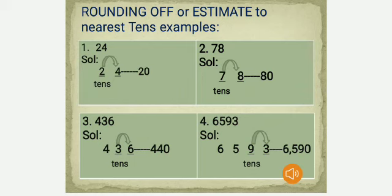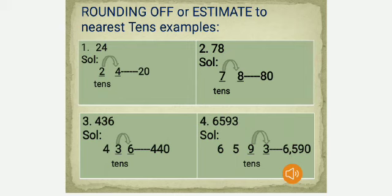Third example: 436. We round only the tens place, so consider 36. The next right digit of 3 is 6, which is more than 5, so we round up to 40, and the overall result becomes 440. Fourth example: 6,593. Consider only the tens place, which is 93. The next right digit is 3, which is less than 5, so we round down to 90, and the overall result is 6,590.